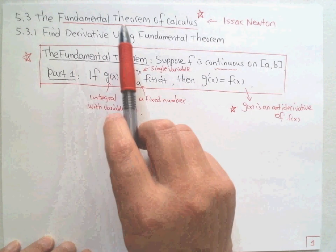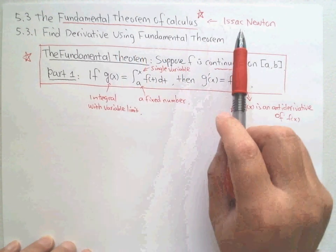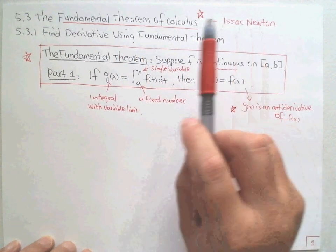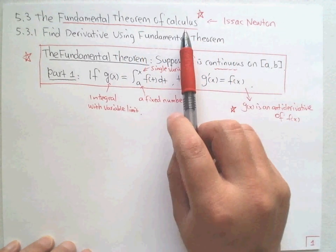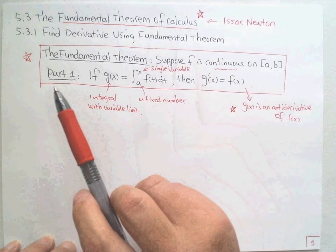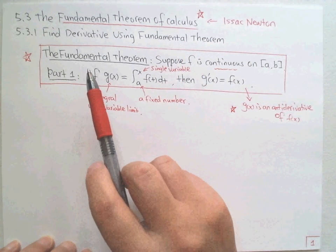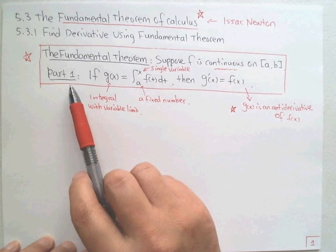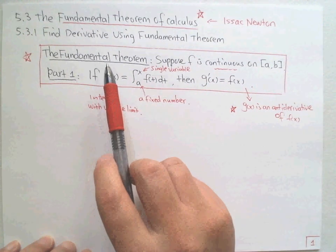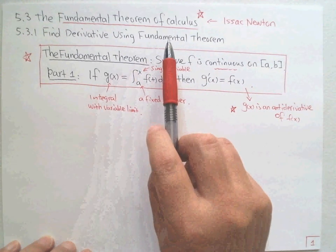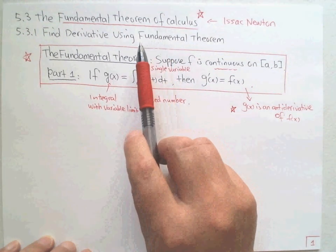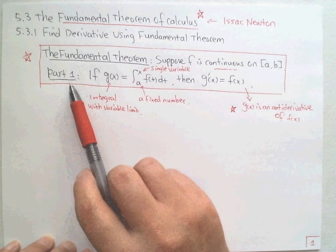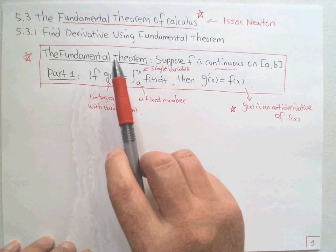Isaac Newton made the greatest contribution to this theory. We have two parts of the theorem. In this lecture, we're going to use Part One of the Fundamental Theorem to find derivatives.